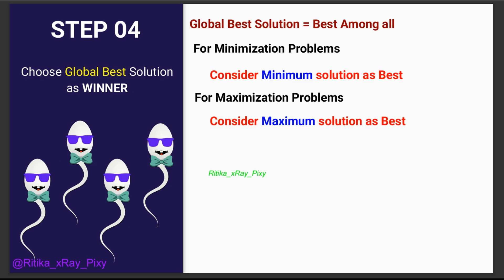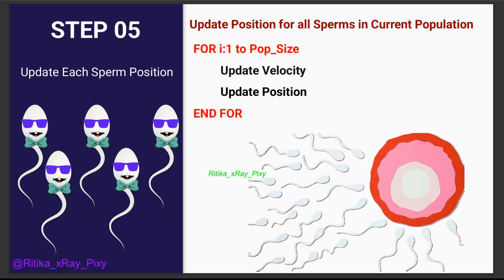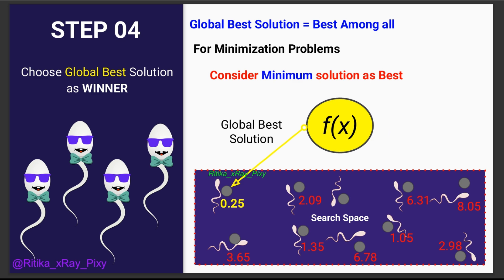After evaluating personal bests, we determine the global best — the best fitness score among all candidates — which represents the winner sperm, the best solution found by the entire swarm. We use the fitness function to measure how close each solution is to the optimal solution.